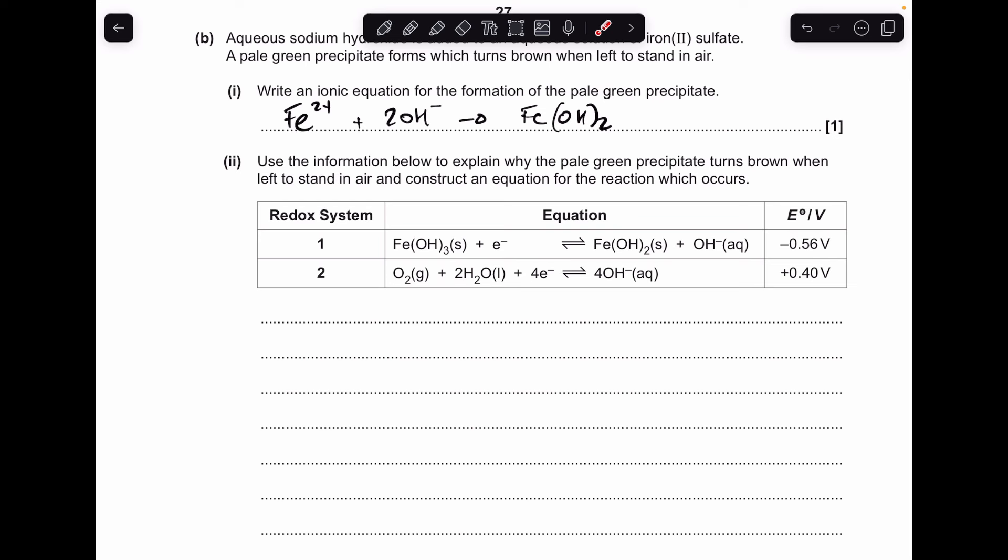Moving on to part b, so the ionic equation for the formation of the pale green precipitate, which is Fe(OH)₂, you can either do this very simple version of the equation, or you can do the full equation that looks like that.